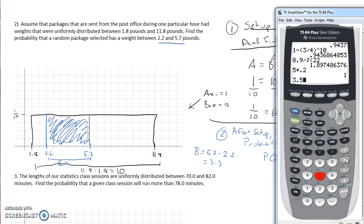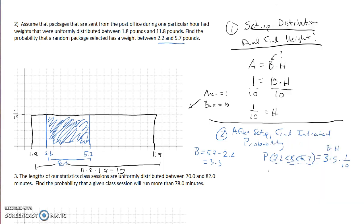Now I know I have one that's a decimal and one that's a fraction, so I'm just going to use my calculator here. It's going to be 3.5 times parentheses 1 over 10. We can write this as the decimal fraction or percent. This gives us 0.35. So the probability that a package is between 2.2 and 5.7 is 35%.